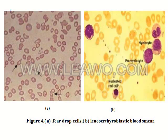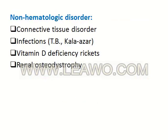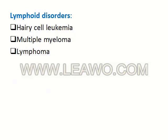This figure A shows tear-drop cells, and B shows the leukoerythroblastic blood smear mentioned previously. Differential diagnosis of primary myelofibrosis: we must differentiate from other causes of secondary myelofibrosis, which include three major categories. Non-hematologic disorders such as vitamin D deficiency, rickets, connective tissue disorders, and renal disorders. Myeloid disorders such as metastatic cancer, leukemia, myelodysplastic syndrome, acute megakaryocytic leukemia, and atypical myeloid disorders. Lymphoid disorders such as hairy cell leukemia, multiple myeloma, and lymphoma.